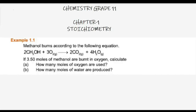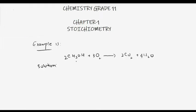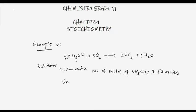The question states that if 3.50 moles of methanol are burnt in oxygen, calculate: (a) how many moles of oxygen are used, and (b) how many moles of water are produced. What we are given is the number of moles of methanol, which is 3.50 moles. The unknown is the moles of oxygen required to react with 3.50 moles of methanol.